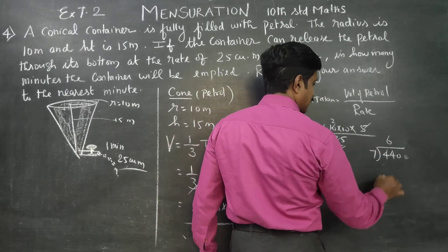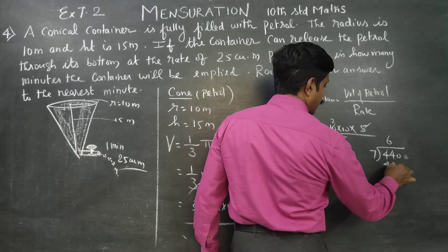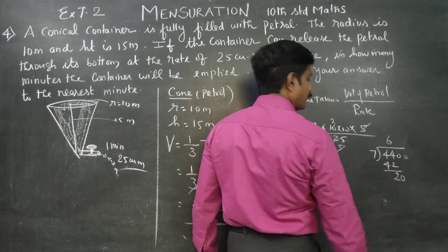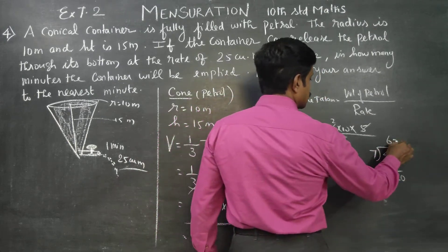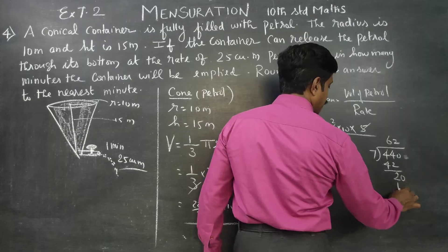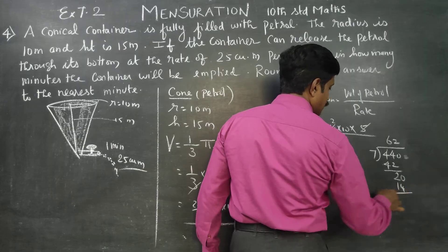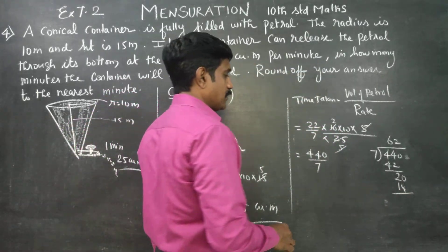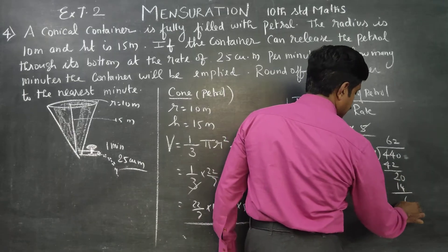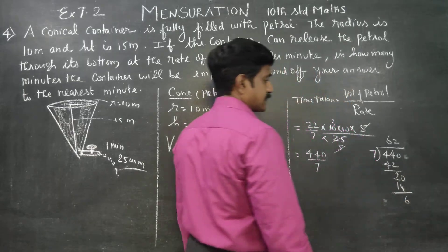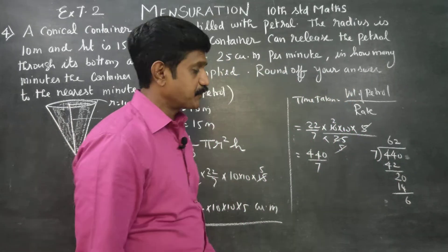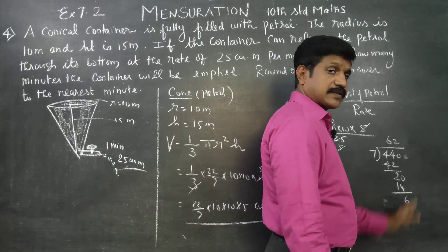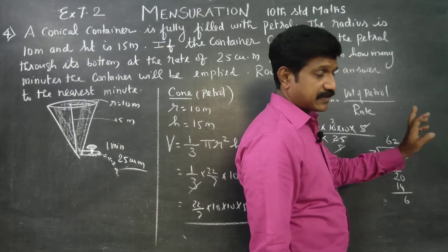Performing the division: 440 ÷ 7. 7 goes into 44 six times (42), remainder 2. Bring down 0 — 7 goes into 20 twice (14), remainder 6. This gives approximately 62 minutes.